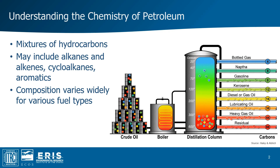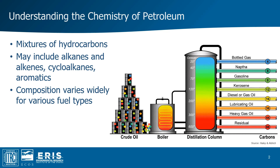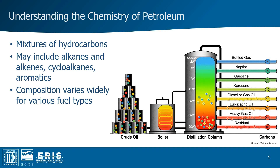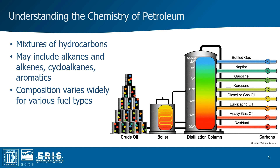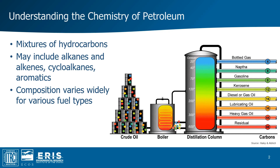Although crude oil has been separated by weight, each of the refined petroleum products is still a mixture that contains hundreds if not thousands of compounds, which may include single bonded alkanes, double bonded alkenes, cycloalkanes, and aromatics. We'll discuss more about the chemical structures of these compounds next.